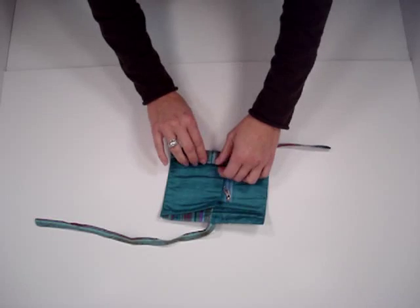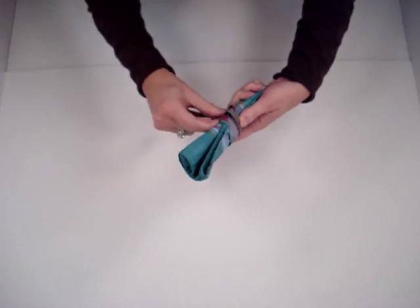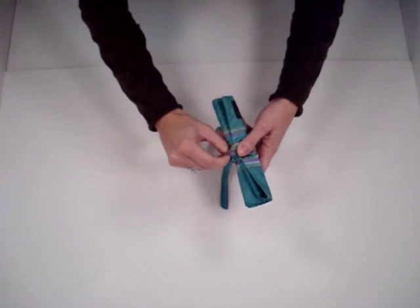You put the flap down, roll it right up, and then you can tie it in a bow or just tuck the tab right through here.